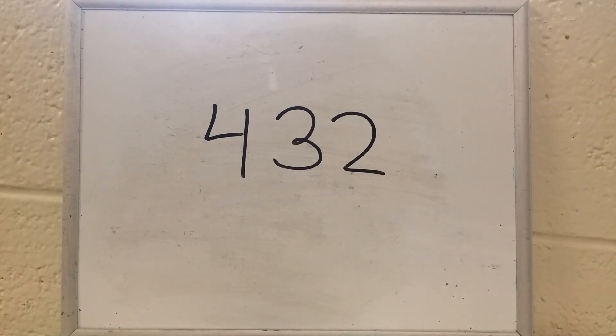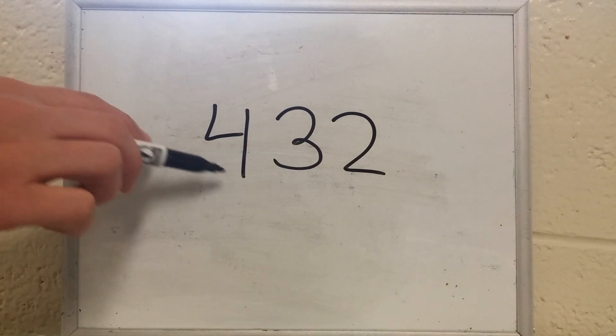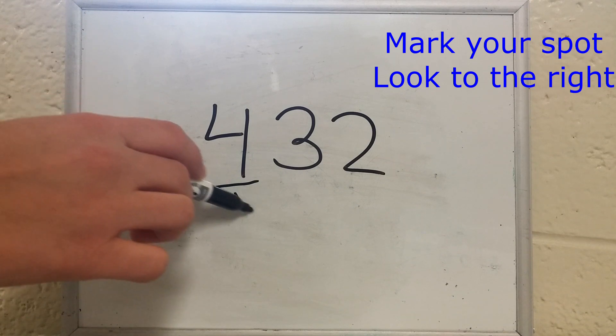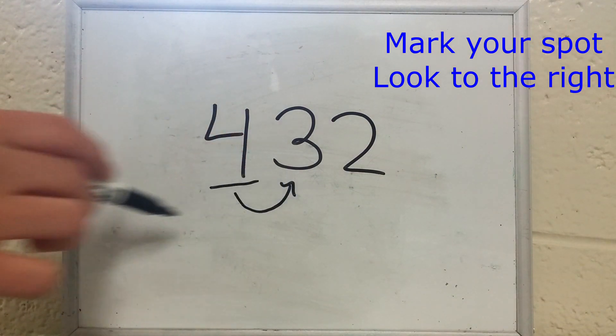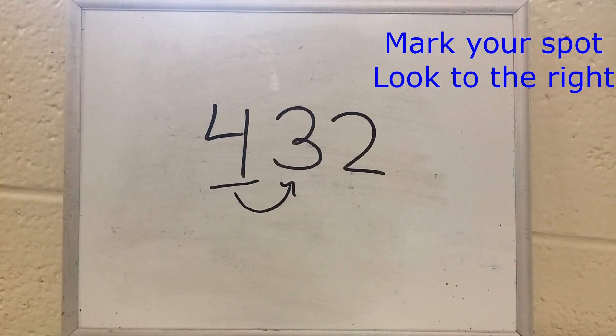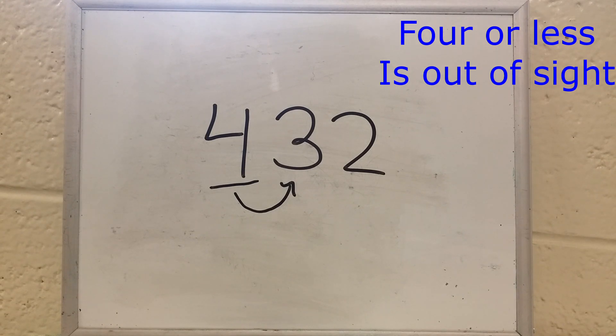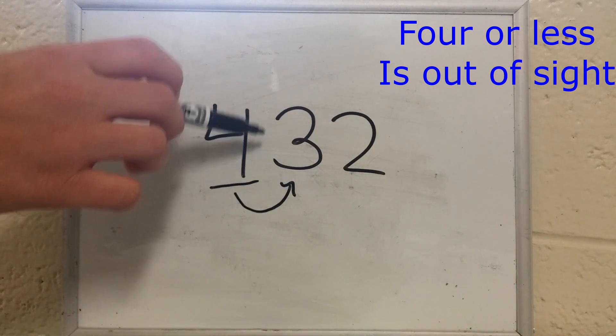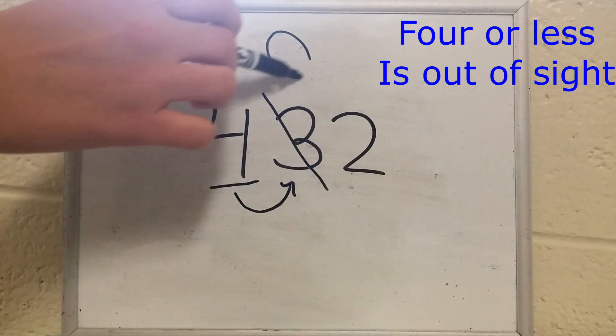Here's our number, 432. We want to round to the hundreds place. Mark your spot, look to the right. There's the mark for hundreds place, and here's the spot to the right. Four or less is out of sight. Three is less than four, so it's out of sight. We'll cross it off and write a zero above it so we remember.